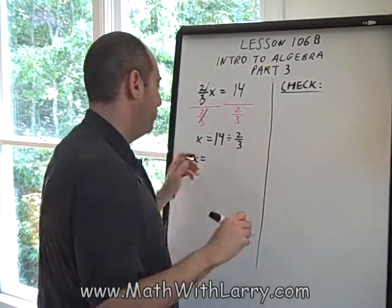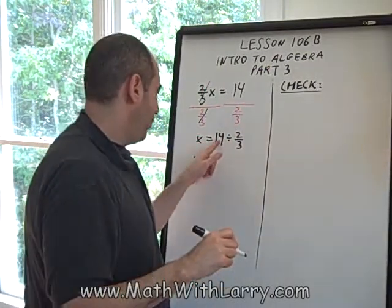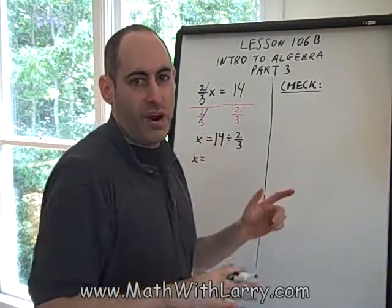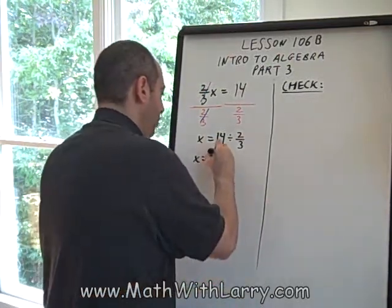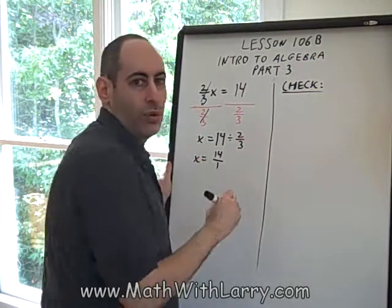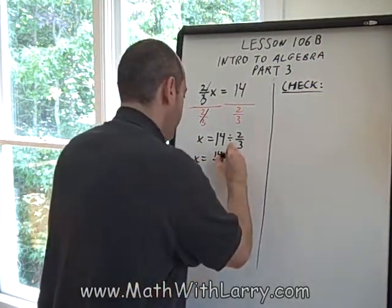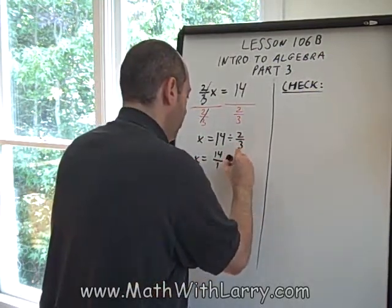Okay, now let's keep going with that. We know that it's a good idea to rewrite 14 as a fraction, since we're now in the world of fractions. And we remember that the way to do that is by putting it over one. We're always allowed to do that. 14 divided by 2/3.